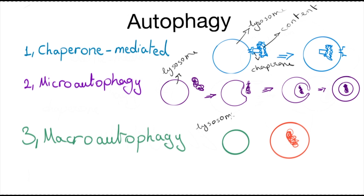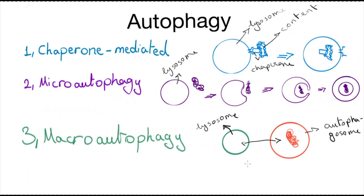All of this is happening inside of the cytosol. We have the lysosome, and then we have our content inside of a double-membrane-bound vacuole, which is called an autophagosome. Eventually, the autophagosome and the lysosome fuse together, their contents blend, and the content we want digested is broken down by the lysosomal enzymes.